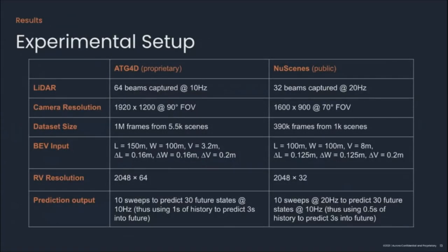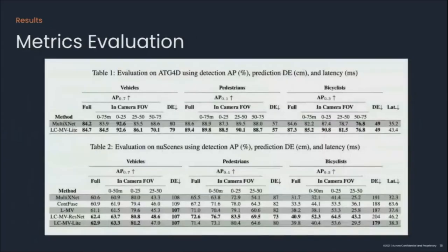Now let's explore how the performance of our method compares to the baseline. We evaluate this method on our proprietary dataset ATG4D as well as the NuScenes public dataset with settings as shown in the table. In the first table, we see a comparison of our method LC-MV with the baseline. The detection performance measured by average precision is higher for all actor types, with the largest improvement at longer ranges. The prediction performance measured by displacement error at 3 seconds has also improved, with the exception of bicyclists, which can be explained by a smaller dataset resulting in noisier numbers. In the next table, we see evaluation results on the publicly available NuScenes dataset. We compare with another fusion method, CONFUSE, and here also LC-MV shows better results with lower latency impact.